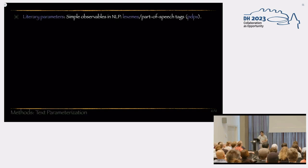Now, how do we do that? First of all, we consider the following literary parameters. These are simple, very basic observables in natural language processing, NLP. We have two representations, different representations of the text. One, a lexematic representation, which is reminiscent of vocabulary, and the second is by part of speech tags. We call it POS, right? So, we have a grammatical and a vocabulary-wise representation of the text. This is a first parameter.